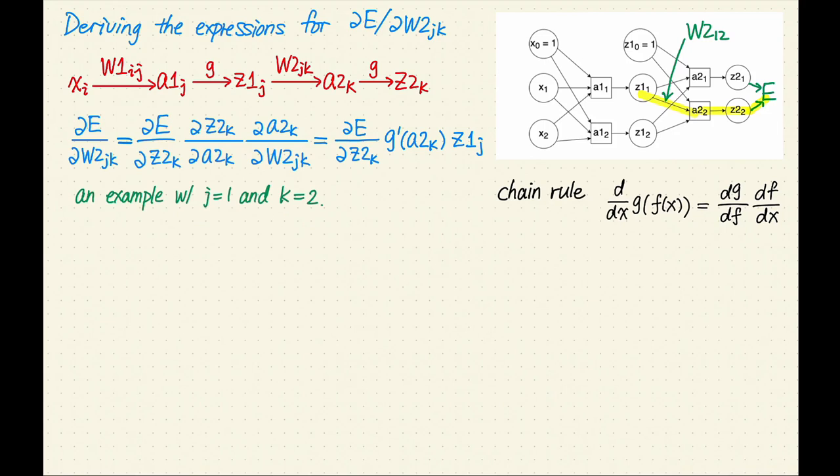Let's do an example for a particular weight. Consider the weight going from z1 sub 1 to a2 sub 2, the highlighted one in the picture. All we need to do is take the general expression and plug in j equals 1 and k equals 2. Here's the result.